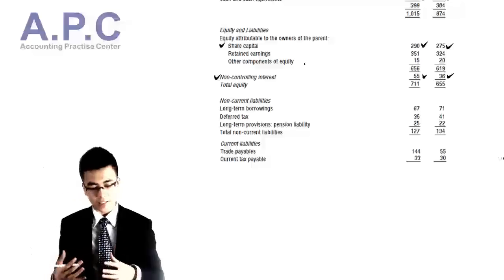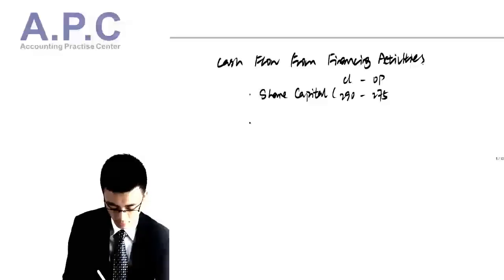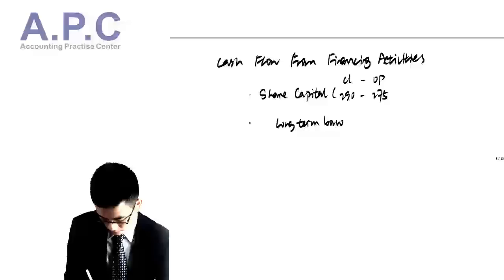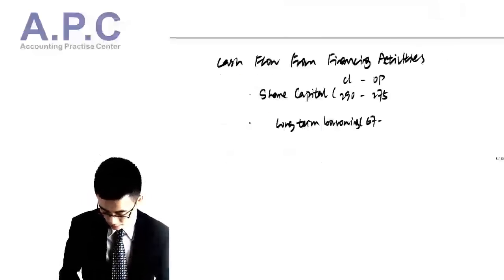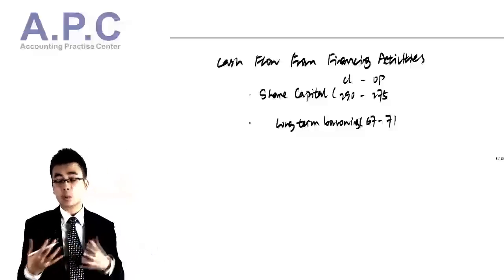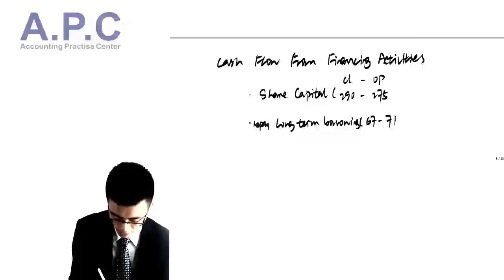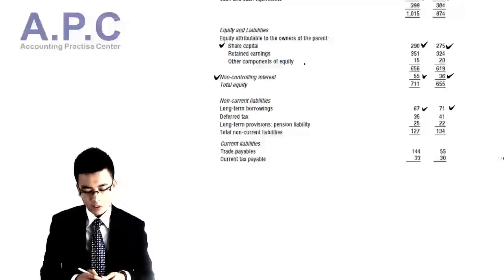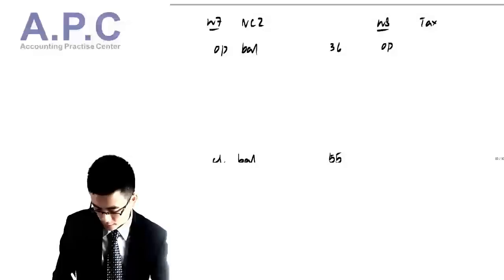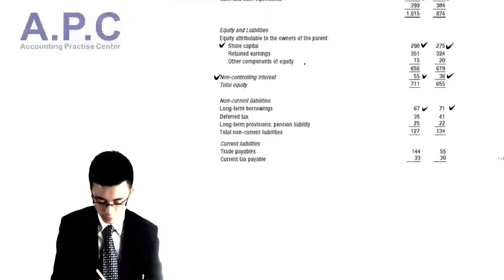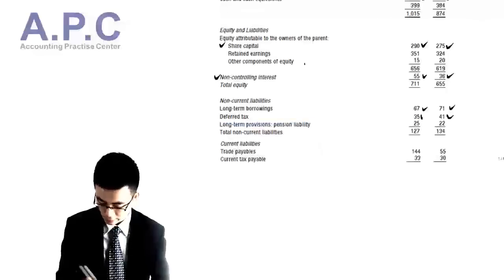Long-term borrowings will be included in our financing activities because we borrow money. Taking closing minus opening: 67 minus 71, which reflects the repayment of long-term borrowing, leading to a cash outflow from the entity. We've got deferred tax, so we open working number 8 for taxes. The opening deferred tax from the question is 41, and the closing DT is 35.